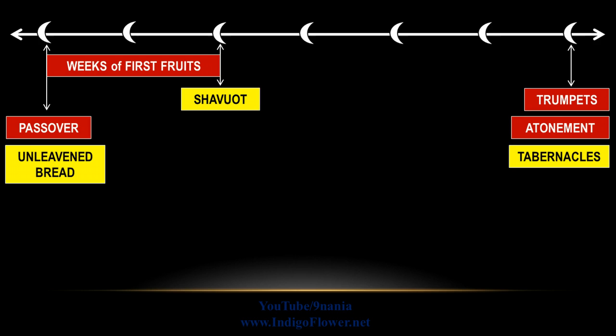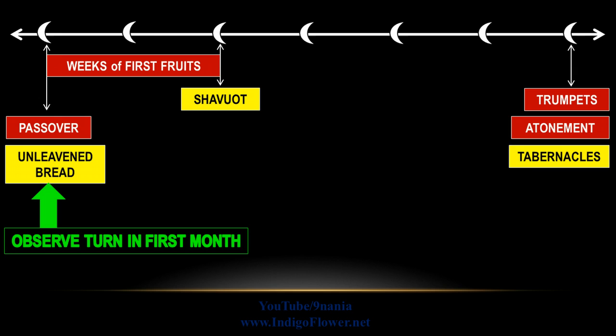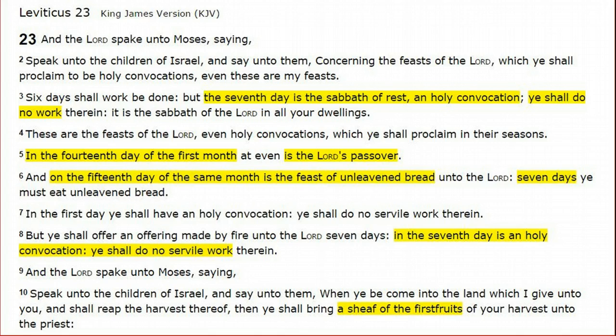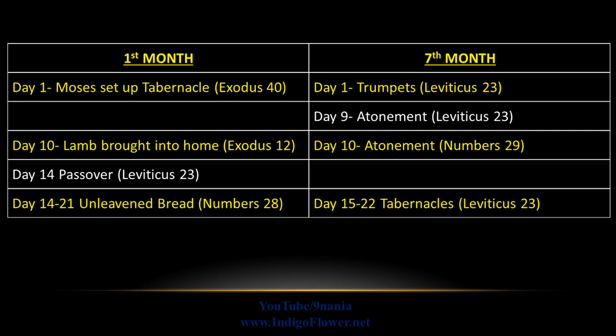We know the weeks of Firstfruits start in the first month and last until the third month. That's the first turn to observe. Then it says to observe the turn on Tabernacles, which is in the seventh month. So it's saying observe the two turns that occur in the first month and the seventh month. In Leviticus 23 it says the weeks of Firstfruits begin at the harvest, which is generally in the fall.